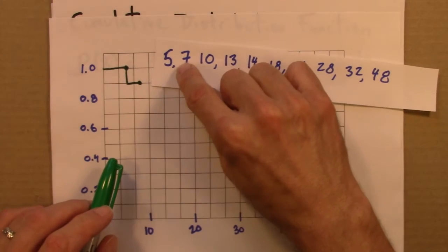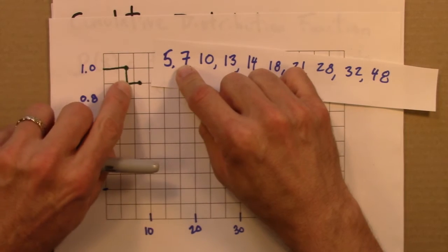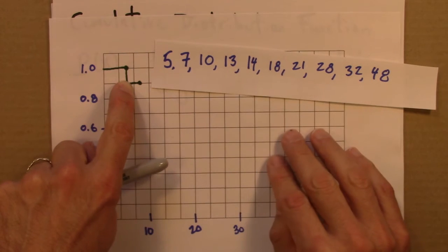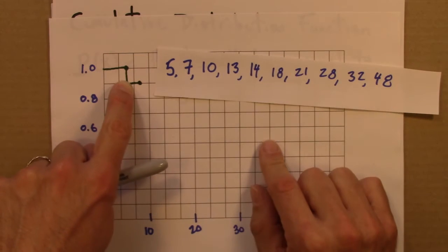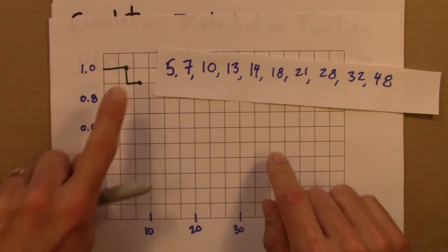What about 6? 6 isn't in my data set, but that's totally fine. I can go here and look and say, alright, so 6, the value would be 0.9. Why? Because 90% of my data is equal to or greater than 6.